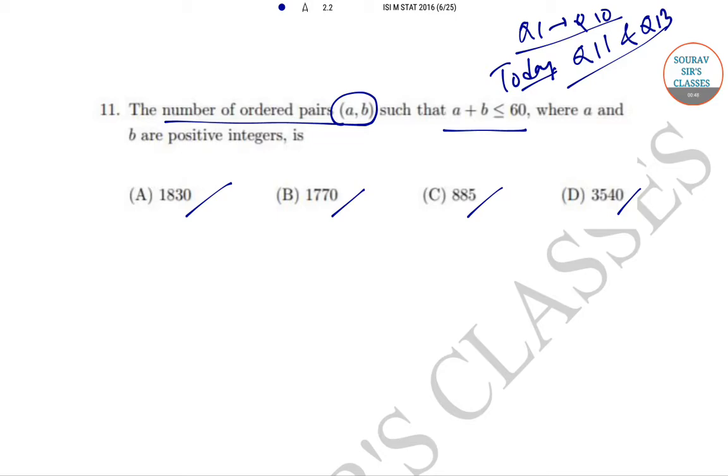So in this case we have been given that (a,b) is an ordered pair such that a plus b is less than or equal to 60. So in this case we can consider two possible cases.